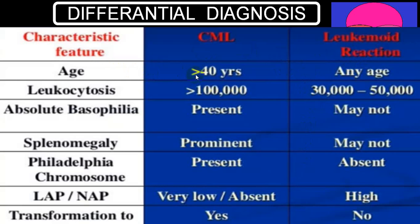To differentiate between CML and leukemoid reaction: regarding age, CML is always in patients more than 40 years of age — you will never see it in an early age group — while leukemoid reaction can be seen at any age. The WBC count in CML is usually more than 100,000, while in leukemoid reaction it is more than 50,000. Leukocytosis between 30,000 to 50,000 can be suspected as leukemoid reaction. In CML you will see basophilia and eosinophilia, but these are usually not seen in leukemoid reaction. Splenomegaly is a common feature in CML but is not seen in leukemoid reaction.